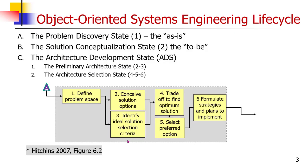The problem solving process really shows up best in the front end. The problem discovery state maps into Derek Hitchin's version of the problem solving system development process in defining the problem space. This is where we understand the as-is situation and what is undesirable about it. We may even model it in this state and build a model of the undesirable situation. The solution conceptualization state is when we conceive a solution — the to-be situation — and we might model it again as well, so we end up with two models. Once we have a conceptual solution, we then create candidate architectures built out of components, which may be hardware or software. We then identify solution selection criteria to select between the candidate architectures, do the trade-off, and make the selection.